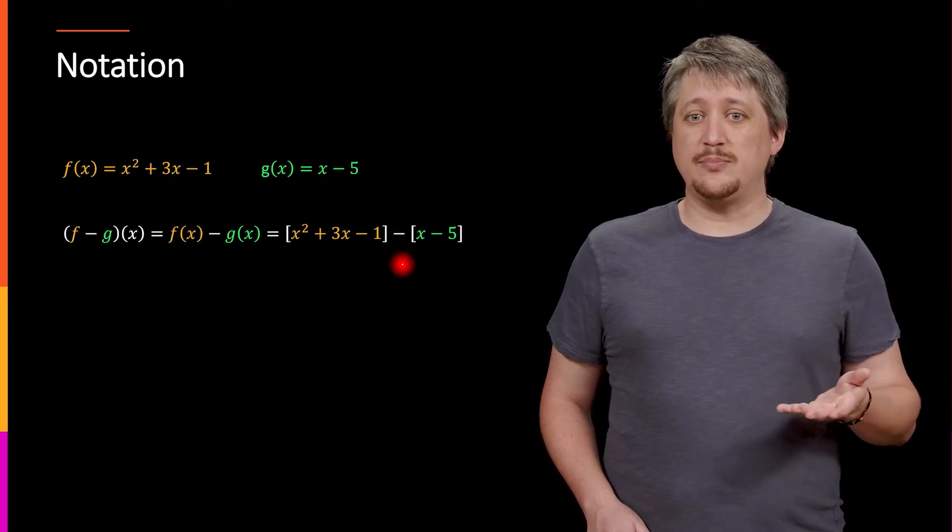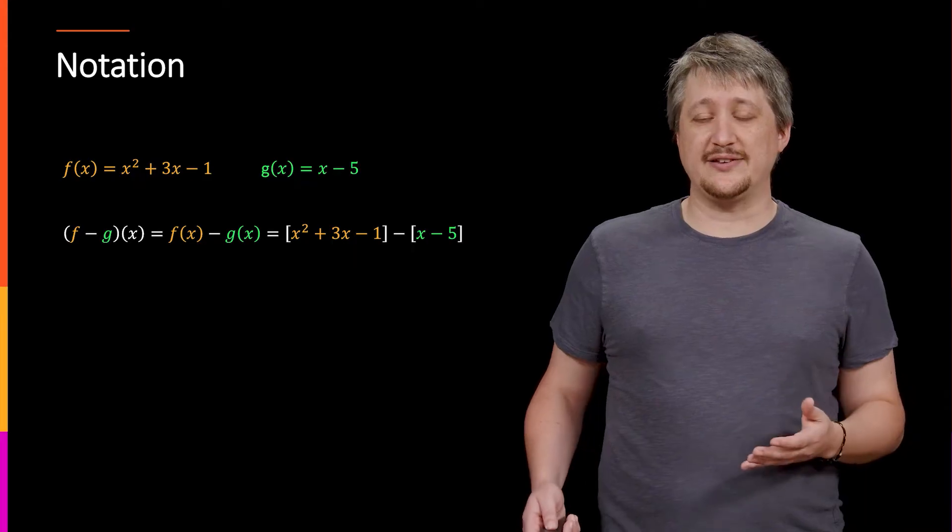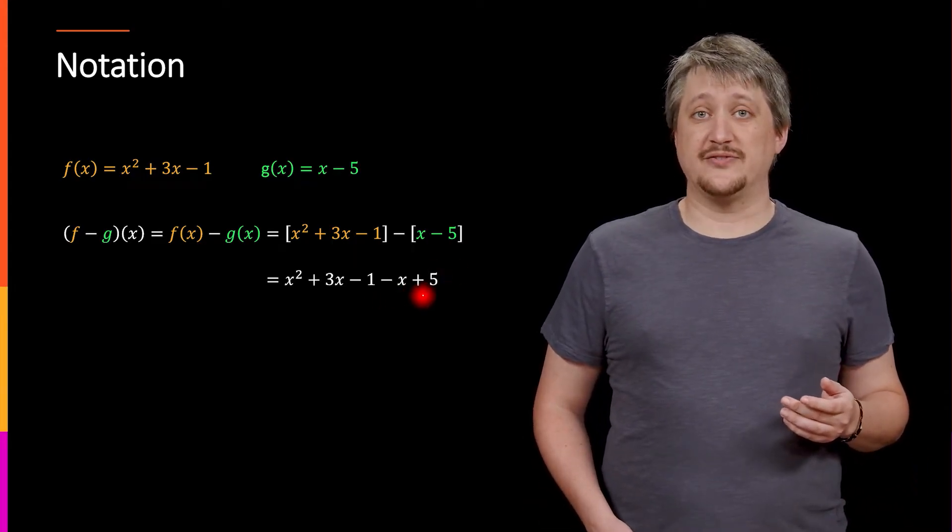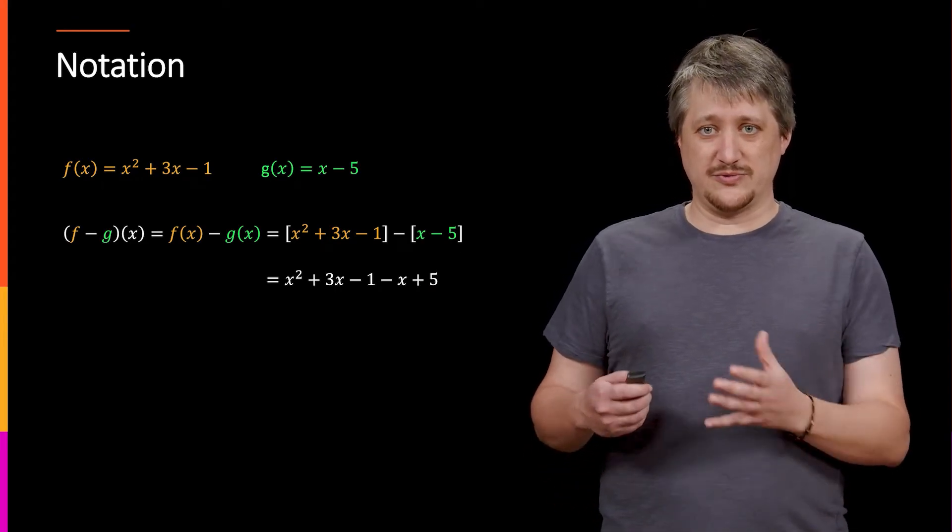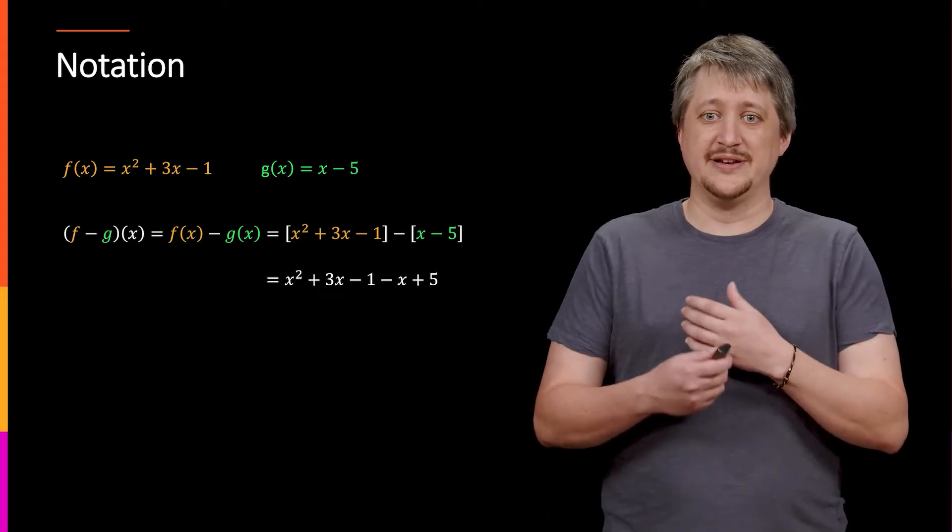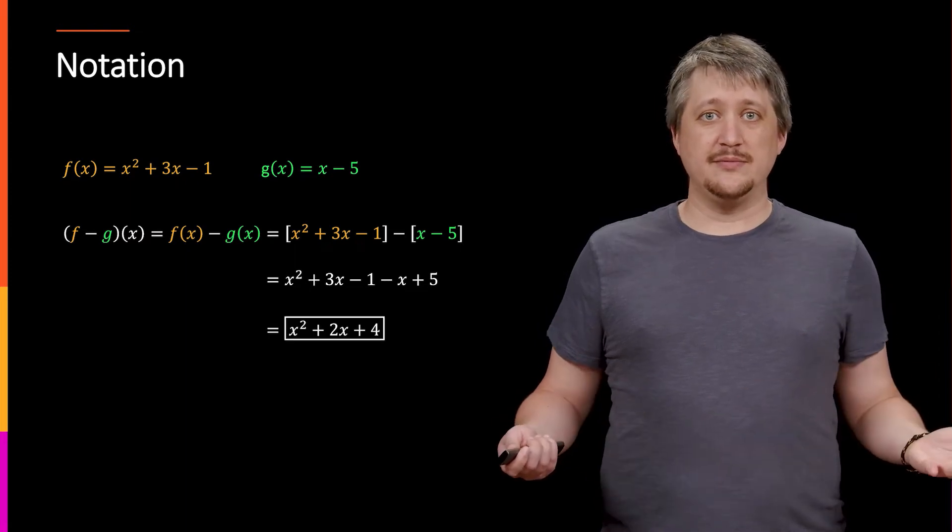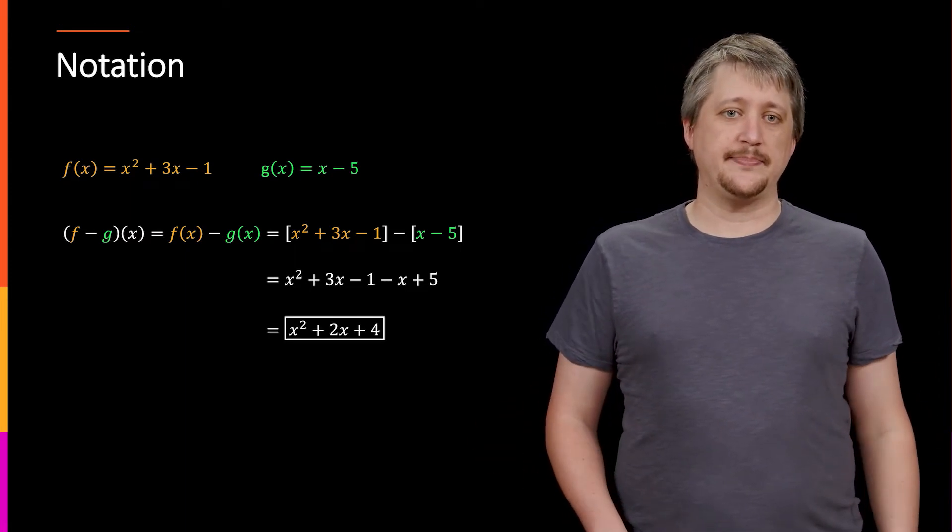So in the next step, when I'm going to start simplifying, I need to distribute that negative to the x and the -5, which is why I'm going to end up with this -x + 5. So one of the most common errors to make here is that you don't use parentheses so that you don't end up distributing that negative correctly and everything goes wrong on you. But once you've done that, putting together like terms, you get your nice simplified version at the end.